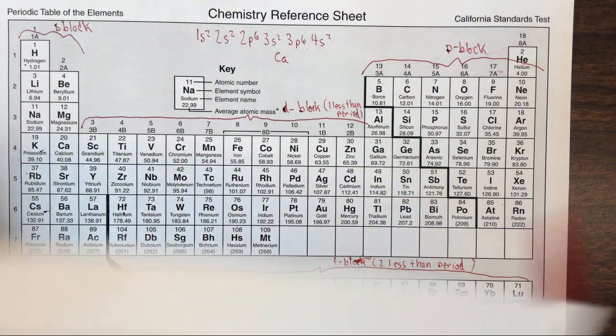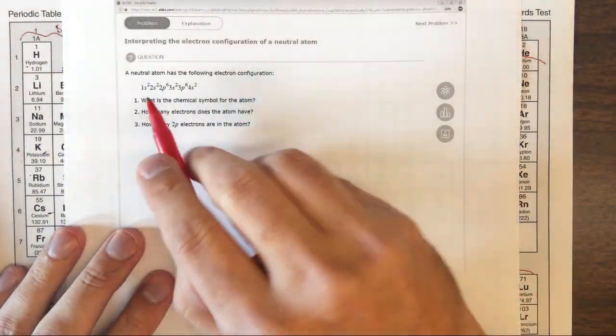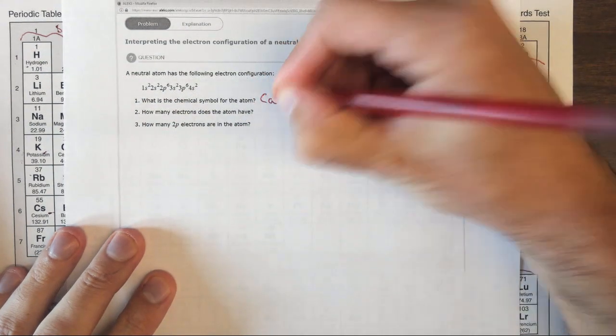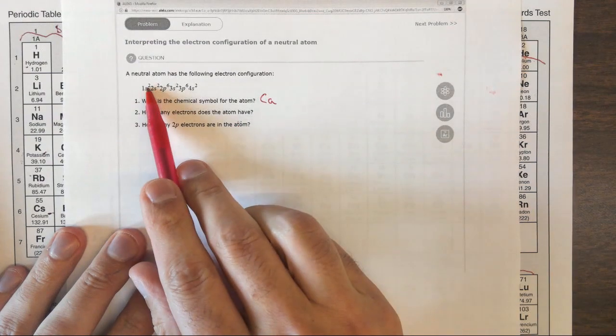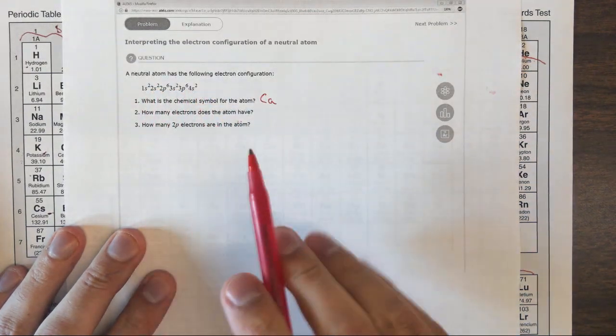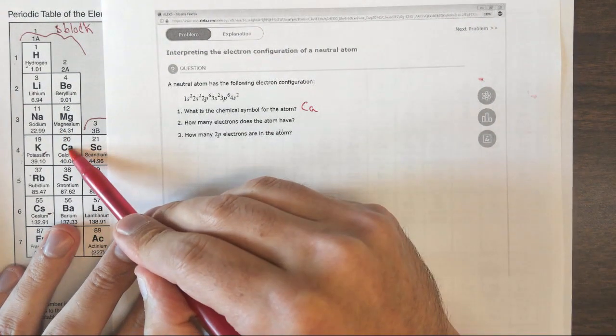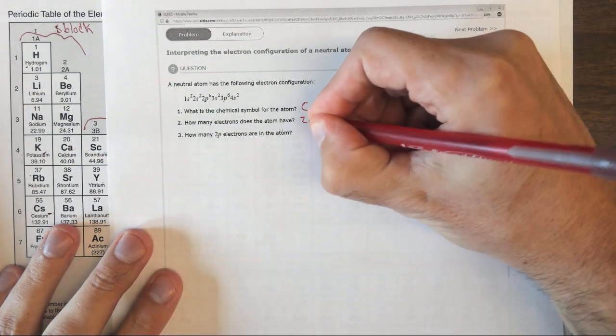Going back to the original problem. We already found the chemical symbol, that's calcium, and we use the periodic table to do that. How many electrons does the atom have? Well, you could add up all the superscripted numbers, or you could just look, a neutral calcium has 20 electrons.